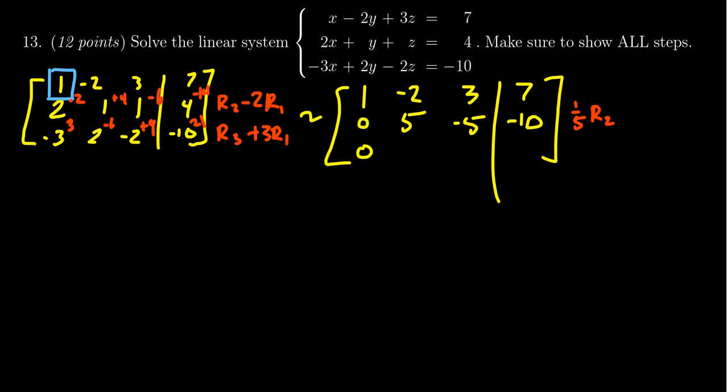Then we get 0 here, -3 plus 3. Next we're going to get 2 minus 6, which is -4. We're going to get -2 plus 9, you're going to get a 7 right there. And then lastly, 21 take away 10 is 11.